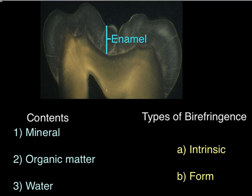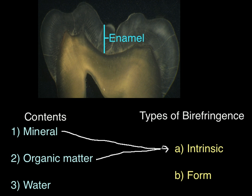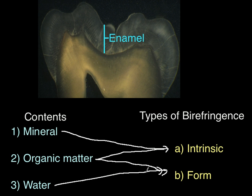To conclude, in dental enamel we have three contents: the mineral, the organic, and water. The mineral content presents intrinsic birefringence. The organic content also presents intrinsic birefringence. The water content presents form birefringence, which can also be contributed by the organic content. In the next video, we are going to explain more about this.